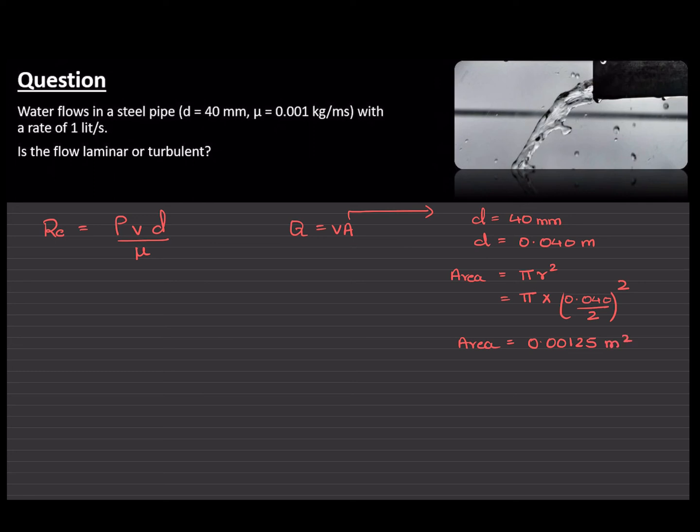Alright, now we know what the area is. You can see that in here, the flow rate is given to you in liter per second. Again, I'm going to convert that into meter cube per second because I want to convert everything to standard units. So, Q equals 1 liter per second. Dividing that by 1000 will give us 0.001 meter cube per second.